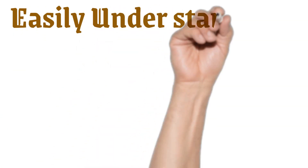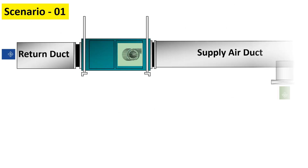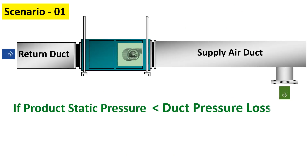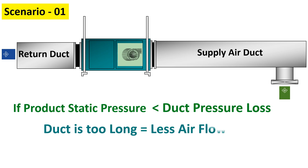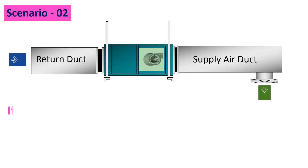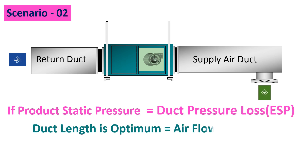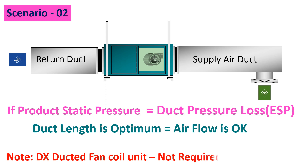Now let's understand external static pressure in three different scenarios. Scenario one: if the product static pressure is less than the duct pressure loss, the ductwork is too long and less air volume results — ESP adjustment is needed in DX ducted fan coil units. Scenario two: if product static pressure equals duct pressure losses, the duct length is optimum and the airflow is correct — no ESP adjustment is required.